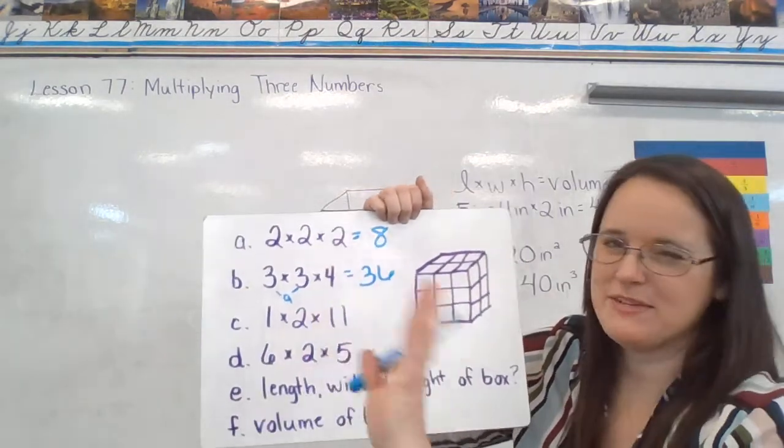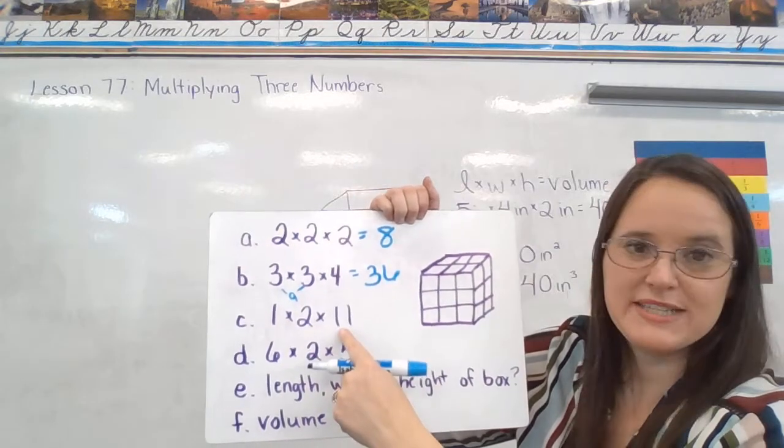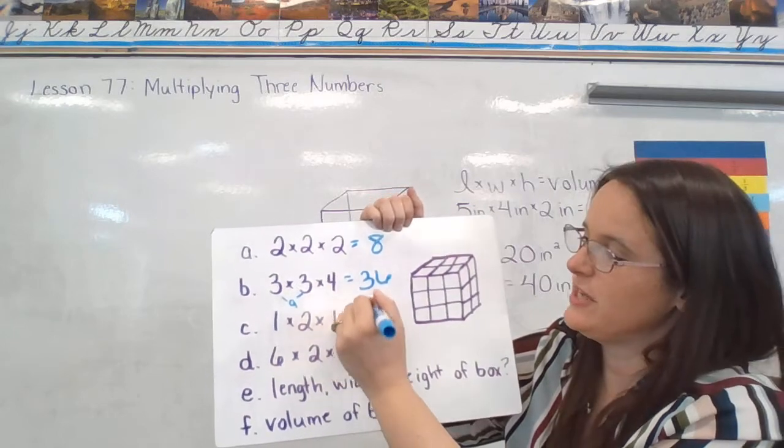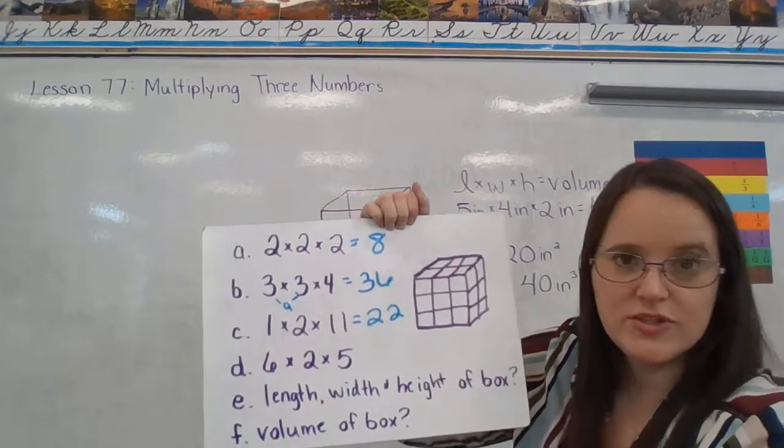See my 1 there? I'm going to save that for last. 2 times 11. Let's use the 11s trick. We've got 22. And 22 times 1 is also 22.